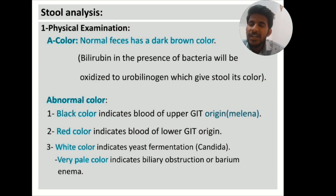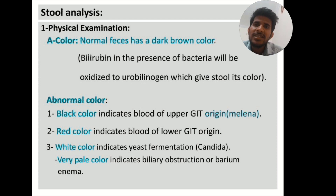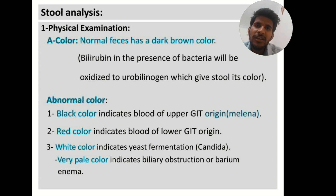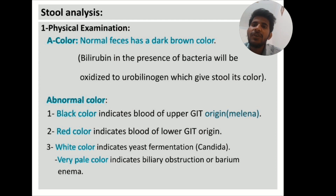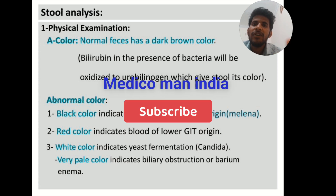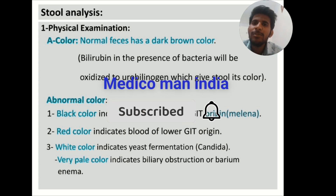In physical examination, first comes color. The normal feces color is dark brown, because of the presence of stercobilinogen in the feces. Abnormal colors: black color is seen in upper GI bleed — the blood takes time to clot and gets converted into melena. Red color is seen in lower GI bleed. White color of feces indicates yeast fermentation, that is Candida. Whenever you see white patches, white purulent exudate, white creamy colonies — think Candida.